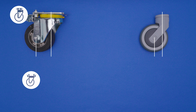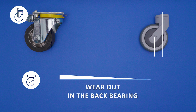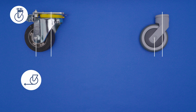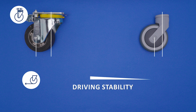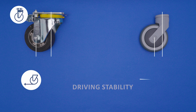Also, casters with a great offset wear out faster in the back bearing. This does not happen to the same extent with casters with a smaller offset. A smooth and consistent driving is easier with casters with a large offset. Casters with a smaller offset cause more unsteady driving and the casters tend to swing when driving straight paths.